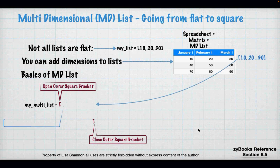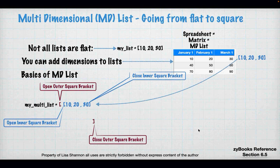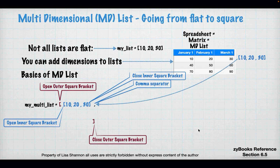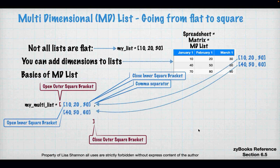If you have a multi-dimensional list, you're going to have loops inside of a loop. Each row in the matrix represents its own list. The first row is [10, 20, 30], the second is [40, 50, 60], and then [70, 80, 90]. Each inner list is an element in the outer list, separated by commas. The outer list always starts with open and closed square brackets, and each inner list has its own brackets.